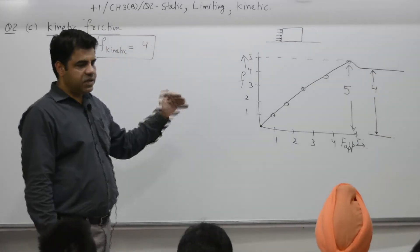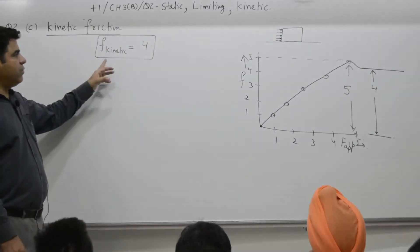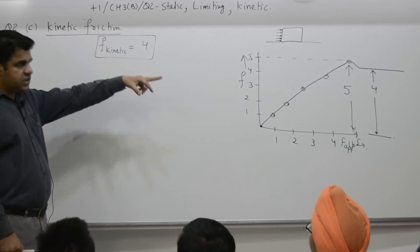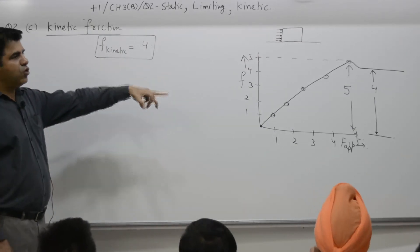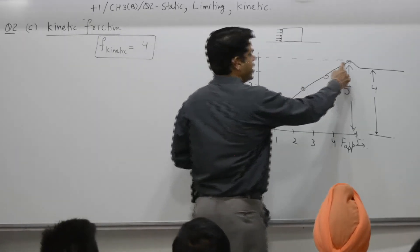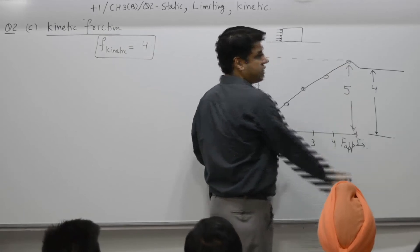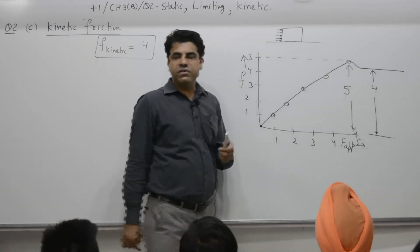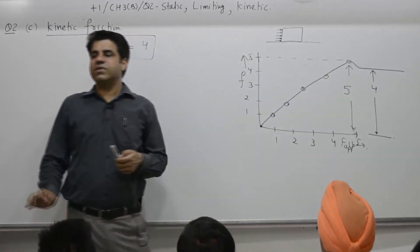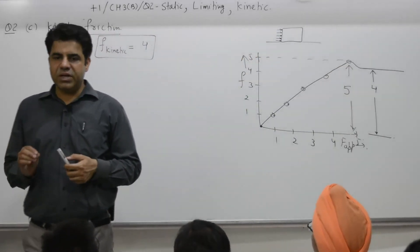So kinetic friction is less than limiting friction. In this graph, kinetic friction is 4 units, which is less than the limiting friction of 5 units. Kinetic friction is always less than limiting friction.